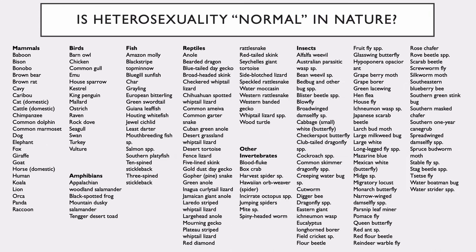Is heterosexuality normal in nature? Despite observer bias up to the 1990s, over 500 animal species have exhibited one or more forms of homosexual behavior, including sex, courtship, affection, pair bonding, or parenting. The examples shown here are only a subset of those 500. Homosexual sexuality in animals is seen as controversial by social conservatives because it asserts the naturalness of homosexuality in humans, while others counter that it has no implications and is nonsensical to equate natural animal behaviors to morality.